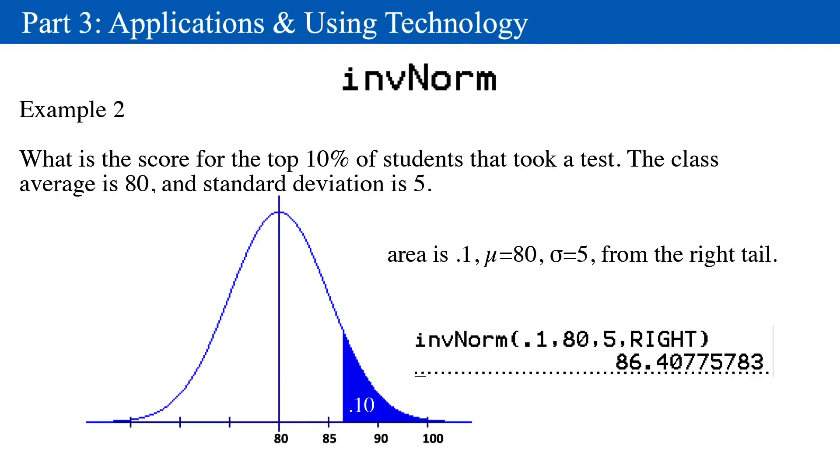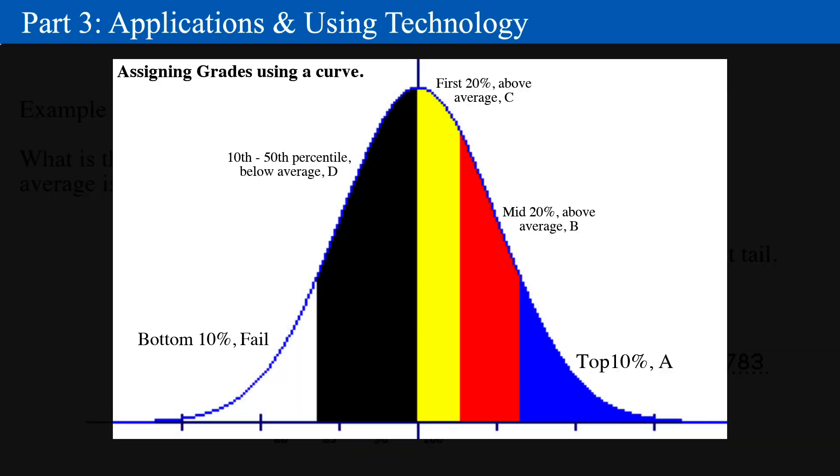Example 2. If we wanted to know the score for the top 10% of students who score on a test, knowing the class average is 80 with a standard deviation of 5, the top performers will have a score of 86 or above. Side note, this is what's called grading on a curve when teachers or instructors award grades using this technique.